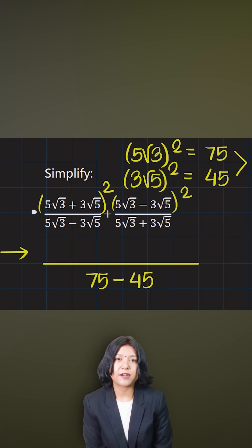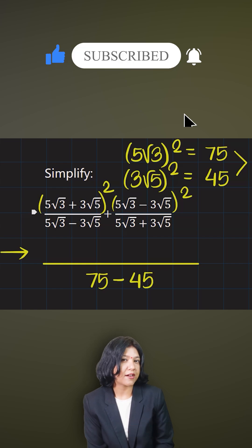Now when you have two things getting whole square and added up in one bracket, while in the other bracket you have the same thing getting subtracted, then what do you do is you can think about their expansion.